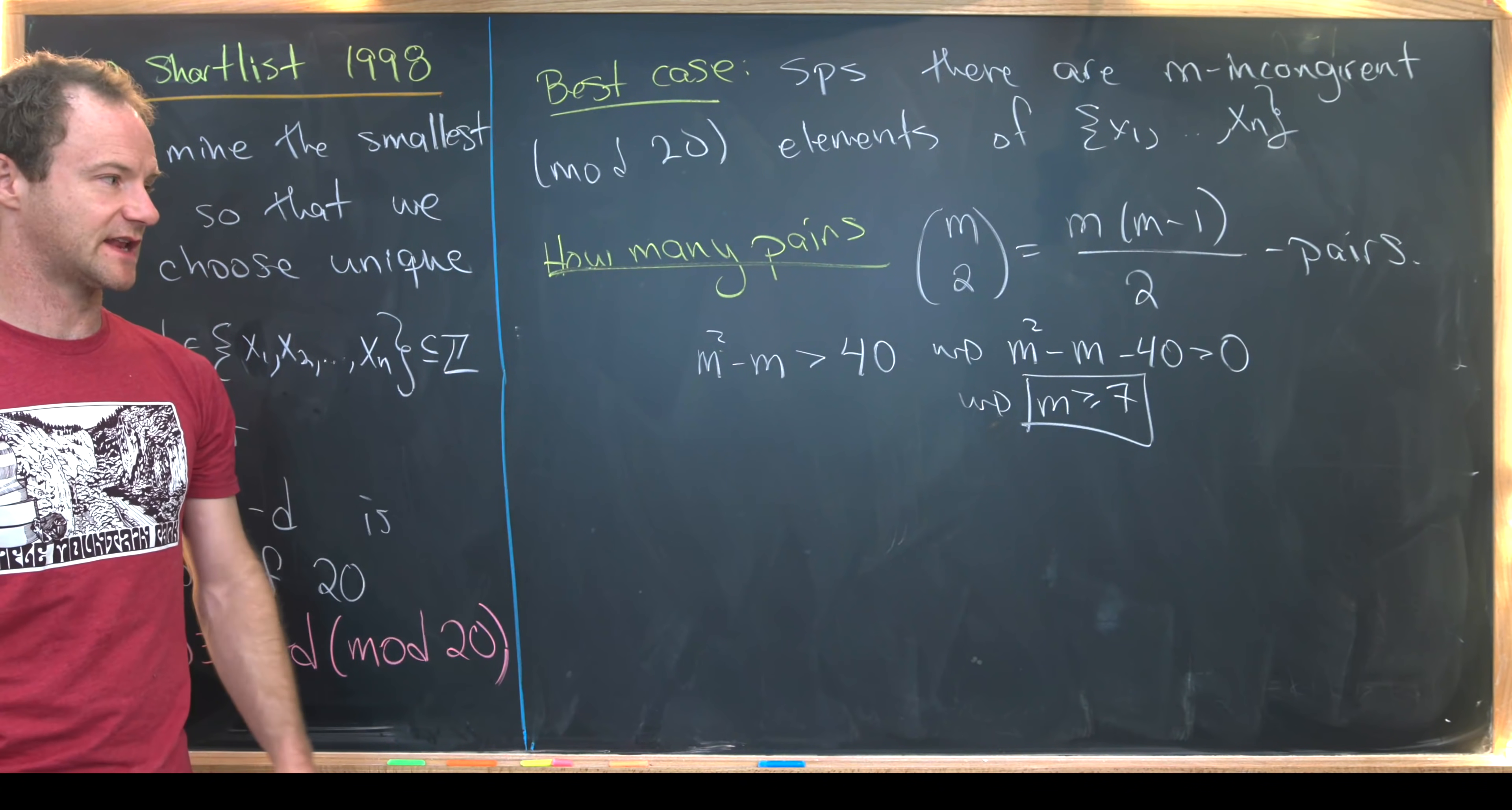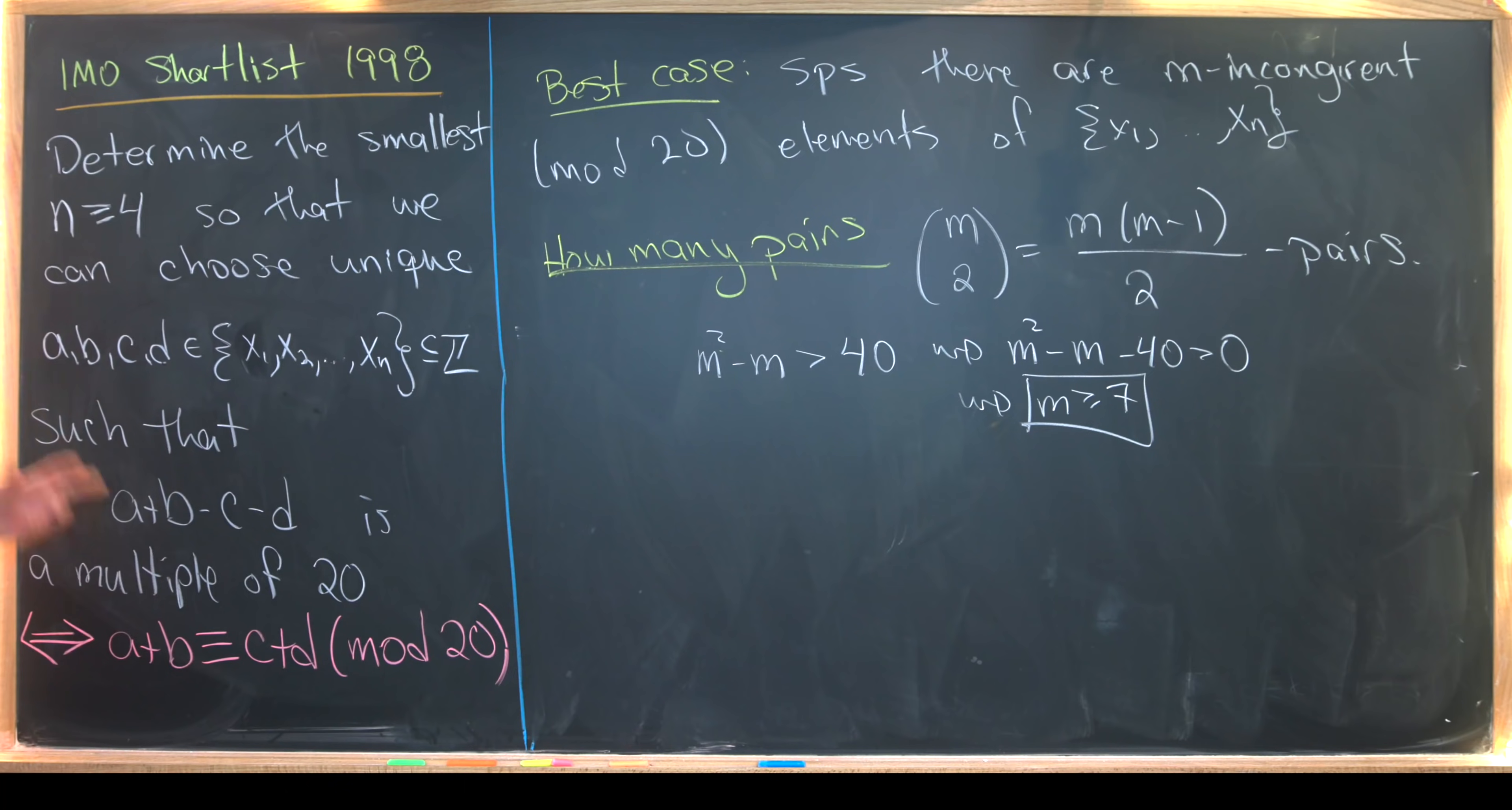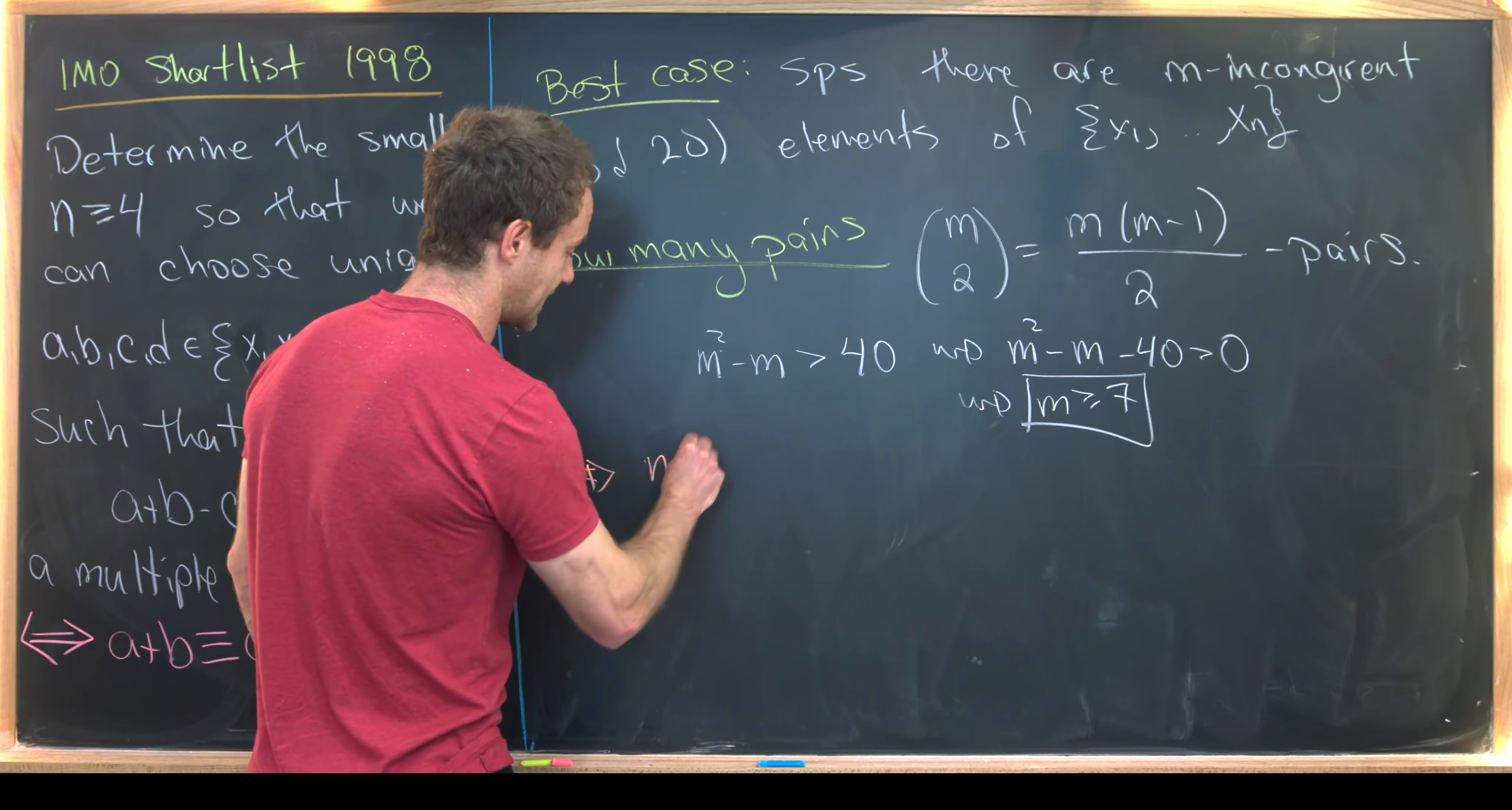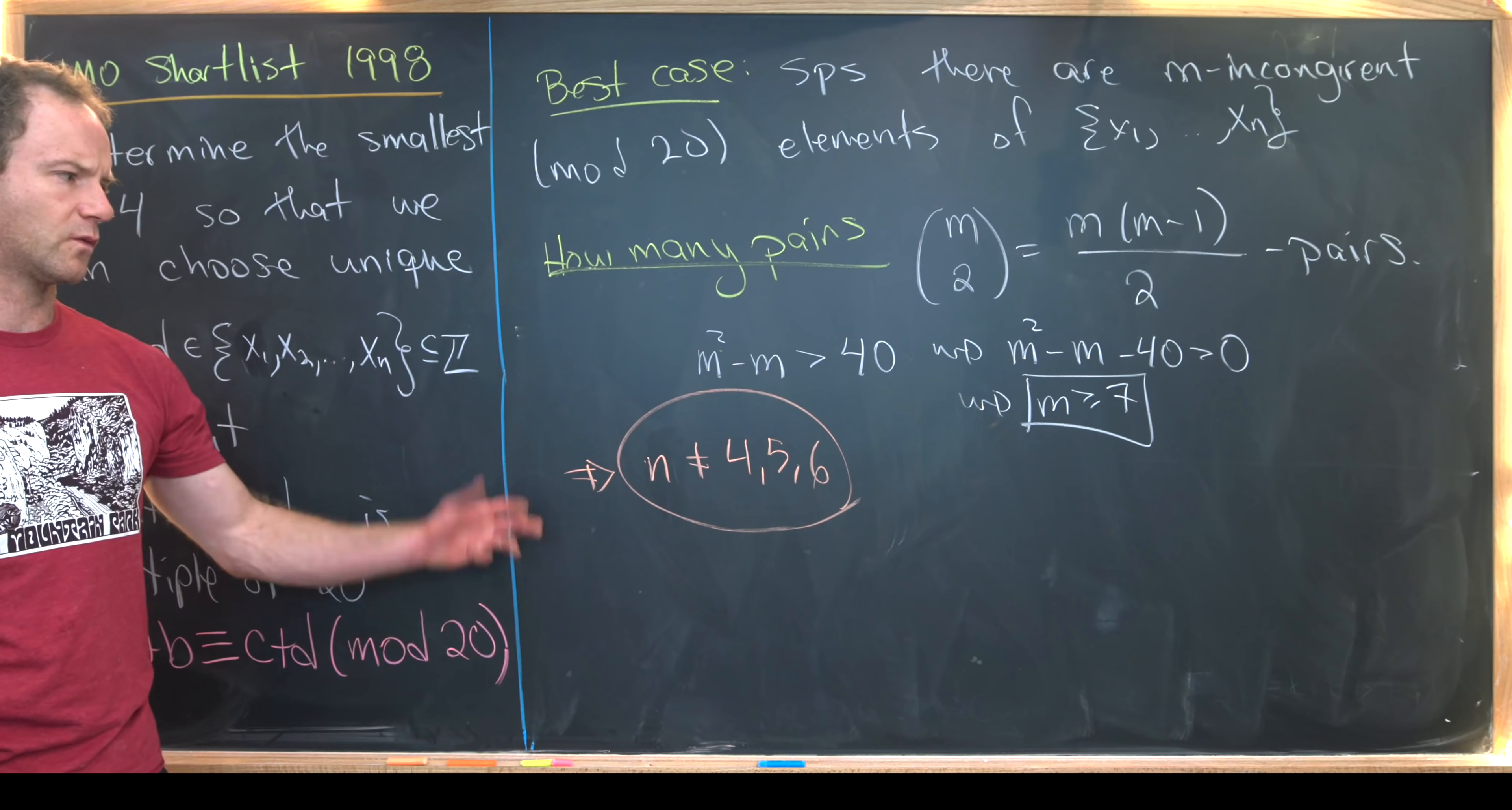So in other words, if our set has seven incongruent elements mod 20, then we can immediately find four of them that satisfy this rule down here. So what does that tell us? That means that n cannot equal 4, 5, or 6.